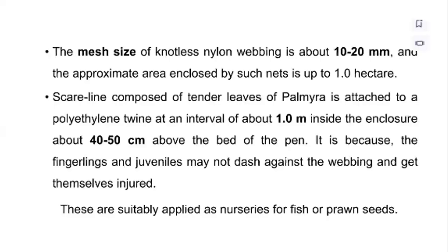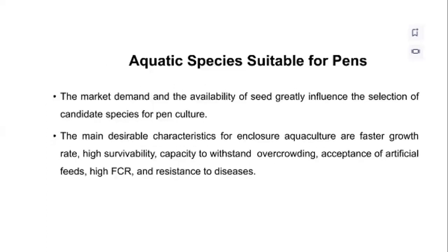The mesh size of the nylon webbing is about 10 to 20 mm, and the area enclosed by such a net is up to one hectare. A scar line composed of tender leaves of palm is attached to the polyethylene twine at intervals of about one meter, placed inside the enclosure about 40 to 50 centimeters above the bed of the pen. This is to prevent fingerlings and juveniles from dashing against the webbing and getting injured. These enclosures are suitable for use as nurseries for fish or prawn seeds.